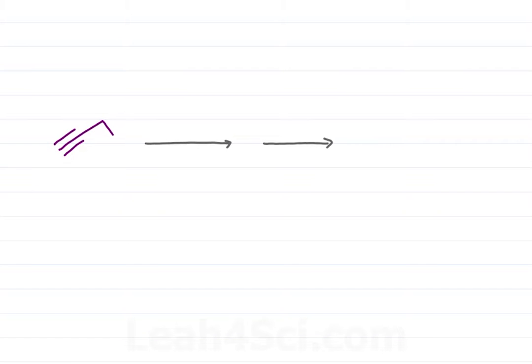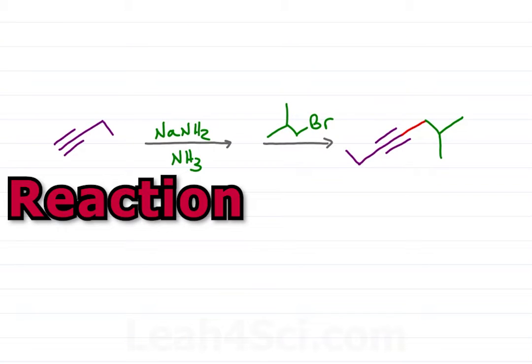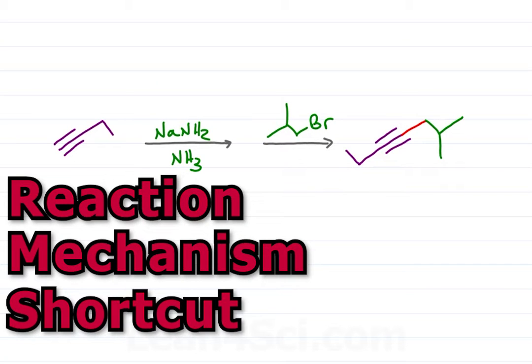What happens if I react a terminal alkyne with a strong base followed by an alkyl halide? We get a chain elongation and in this Lea4Sci video, you'll learn the reaction mechanism and shortcut for alkylation using a terminal alkyne.